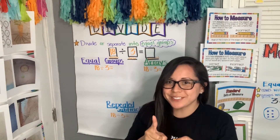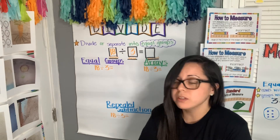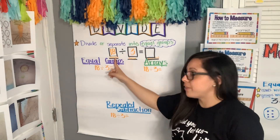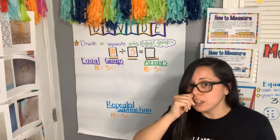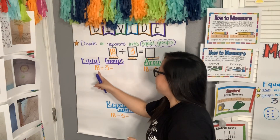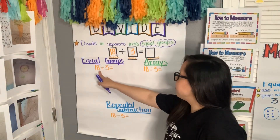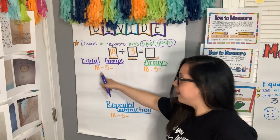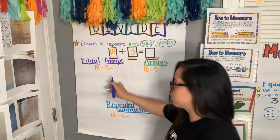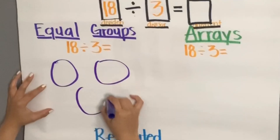The dividend tells me how many objects or how many things I have in total. The divisor tells me into how many groups I am going to separate the dividend. And the quotient is the answer — how many are in each group. We are going to divide using equal groups. I have a total of 18 that needs to be divided into three equal groups, so I'm going to draw three groups: one, two, three.